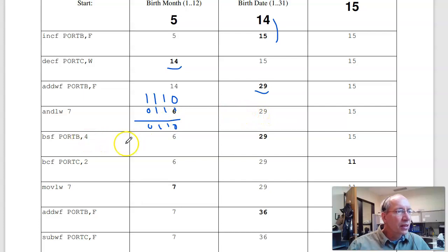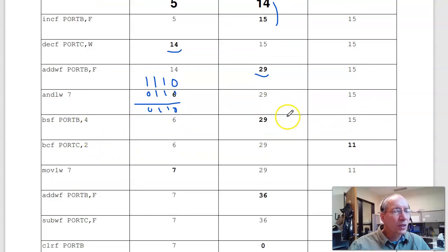Set bit number 4 of port B. So 29 is 16 plus 8 plus 4 plus 1. So there's 29 in binary. I want to set bit 0, 1, 2, 3, 4 - set this guy right here. There's number 4. It's already set, so no change.